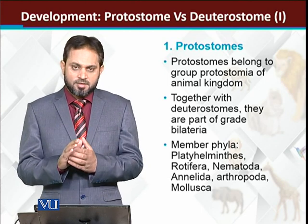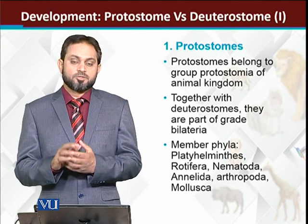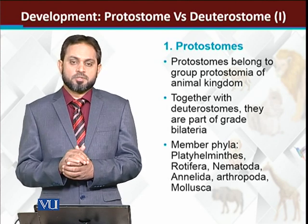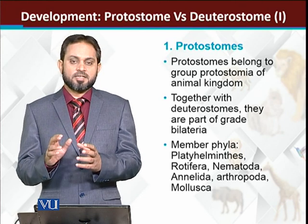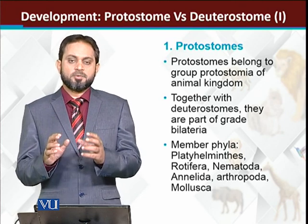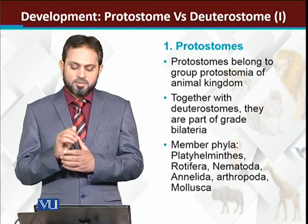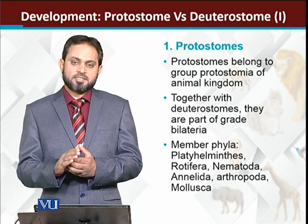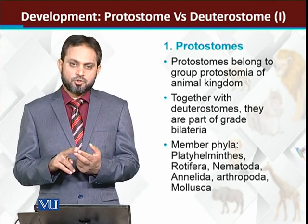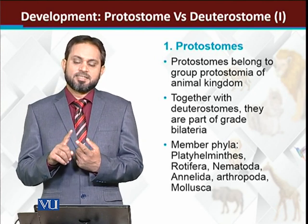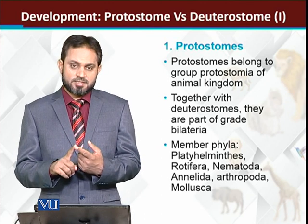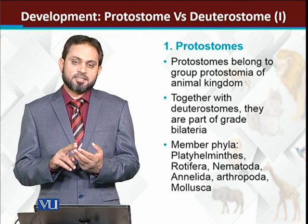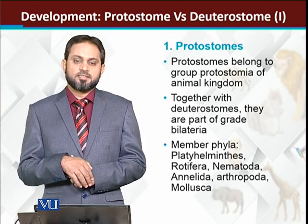So first we have the protostomes. اگر ہم word کو دیکھتے ہیں, there are two words: proto means first and stome means mouth. So protostome is the group of animals in which the blastopore, which is formed during gastrulation, is transformed into the mouth. Protostomes include triploblastic animals whether they are acoelomates, pseudocoelomates, or some coelomates. The representative phyla are platyhelminthes (acoelomates), aschelminthes (pseudocoelomates), then nematodes, annelids, and mollusca.